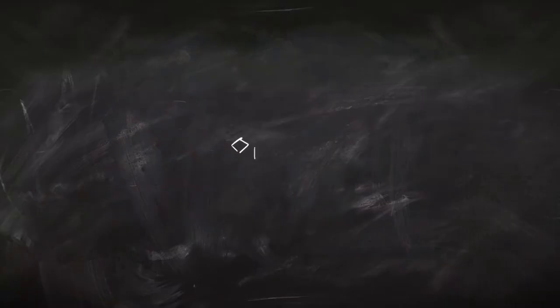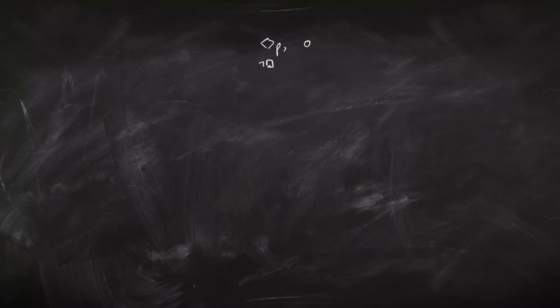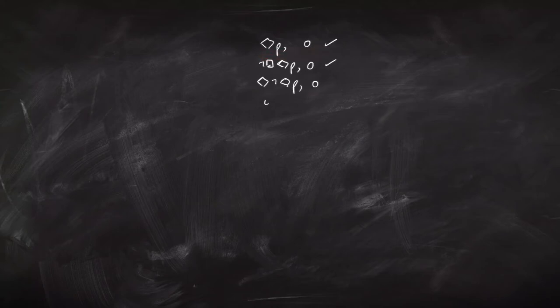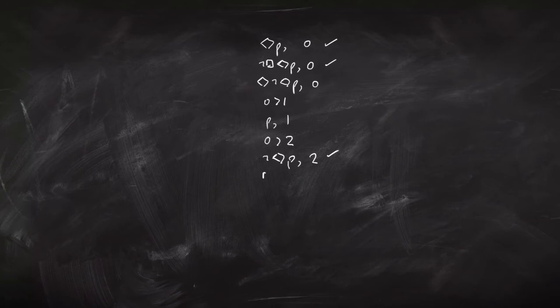Let's look at some examples. Suppose we want to know whether diamond P entails box-diamond P in the modal system KB4. That means we can use all the regular modal logic rules plus the B rule and the 4 rule. We write down the premise diamond P at world zero, and the negation of the conclusion at world zero. The conclusion is not-box, so it becomes diamond not-diamond P. Applying the diamond rule to diamond P gives us a new world: zero-arrow-one with P true at world one. That diamond sentence gives another new world: zero-arrow-two with not-diamond P true there. Not-diamond becomes box not-P. There are now no more logical sentences to apply rules to, so we fiddle with the accessibility relations using B and 4.